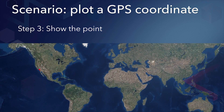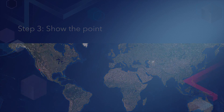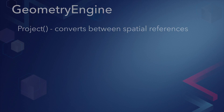This map is showing a point in the WGS84 spatial reference on a Web Mercator base map. In this case, ArcGIS Runtime handles the reprojection automatically. Alternatively, you could use the GeometryEngine.project method to convert to the desired spatial reference before plotting the point.